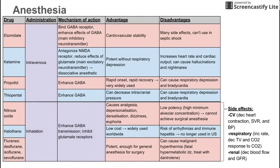Halothane is the next inhalation anesthetic. It has the same mechanism of action: enhance GABA, inhibit glutamate. The advantage of halothane is that it has a low cost. It's not used in the US, but it's used throughout much of the rest of the world because it's cheap. The disadvantage is that it carries a risk of arrhythmias and immune hepatitis, and for those reasons it's no longer used in the United States.